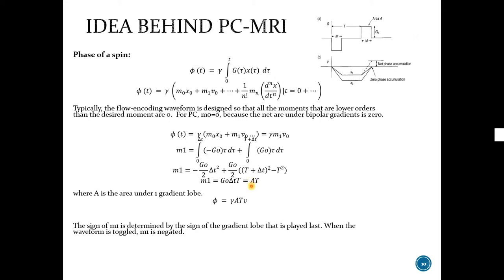Substituting AT into M1, we can obtain this relation: phase equals gamma ATV. The sign of the phase is determined by the sign of the gradient lobe that is played last, because it comes from this integral, and this integral is related with the last lobe.